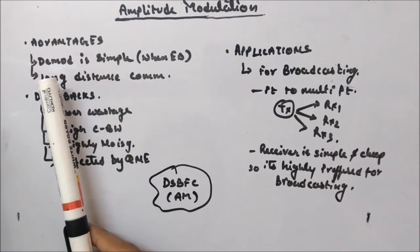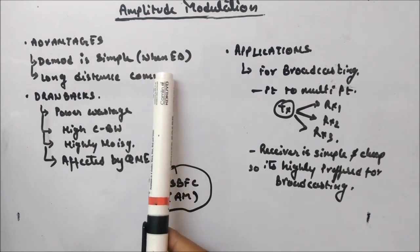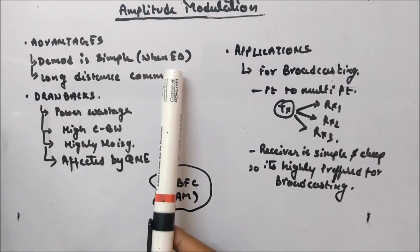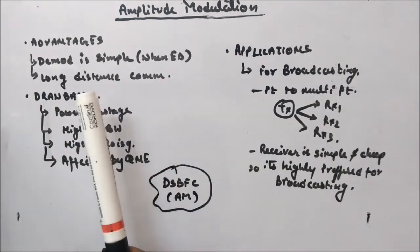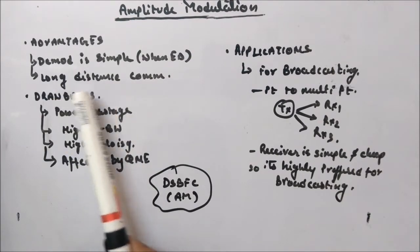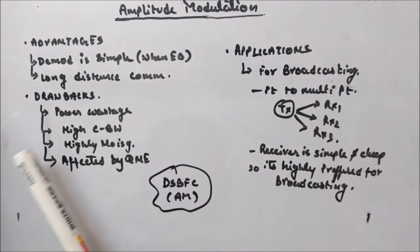So advantages are demodulation is simpler when envelope detector is used. It becomes complex when you use a synchronous detector. It is used for long distance communication.